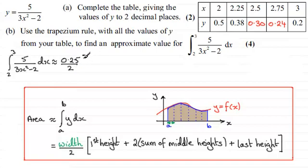And then to this, we multiply this with the first height, the first y value, which will be 0.5. And then we do plus 2 times the sum of all the middle heights, the middle y values. Well, that's going to be 0.38, plus 0.30, plus 0.24. And then to this, we add the last height, 0.2.